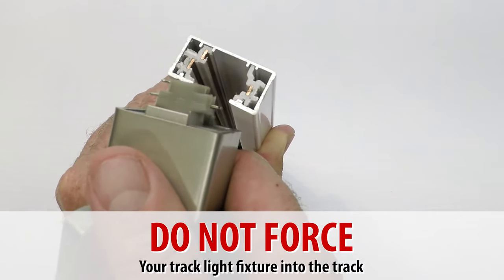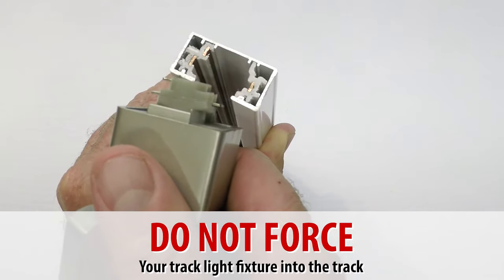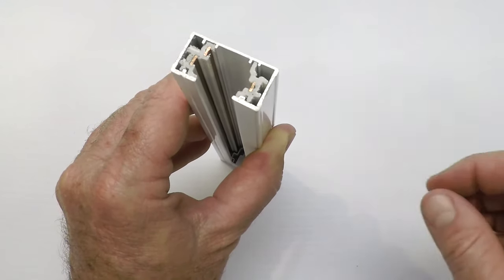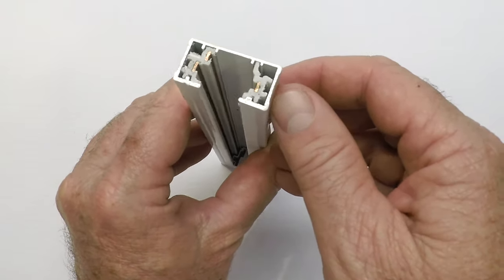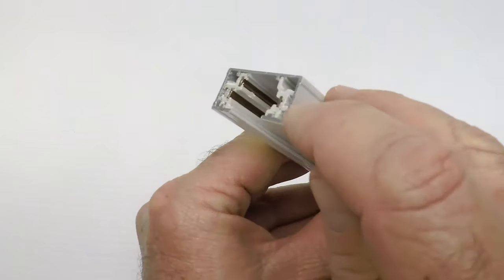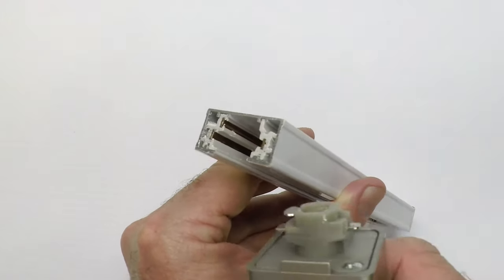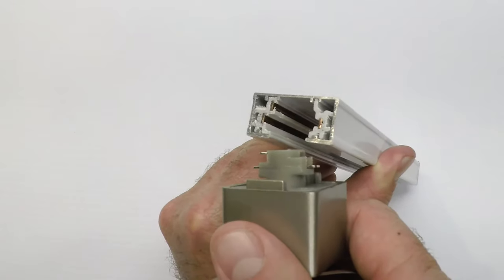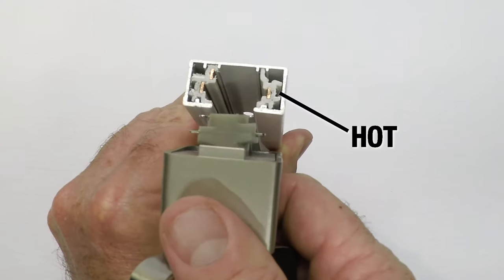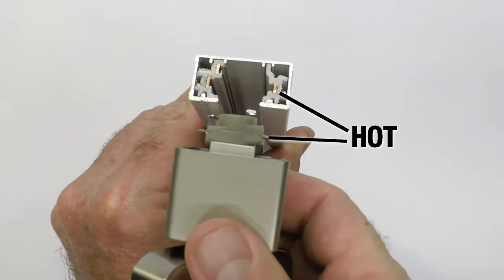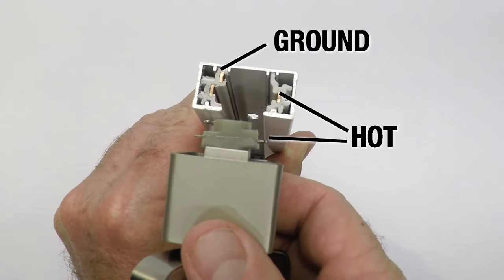Now forcing your light fixture the wrong direction into your track is a bad idea. On a number of tracks, we've actually taken a felt pen, especially on the white ones, and we put an H where the hot is. That way when we look at the light fixture you'll see the similarities, how these line up where we have the hot bus bar, we have the pin on the fixture which is hot, we have the ground and the neutral.